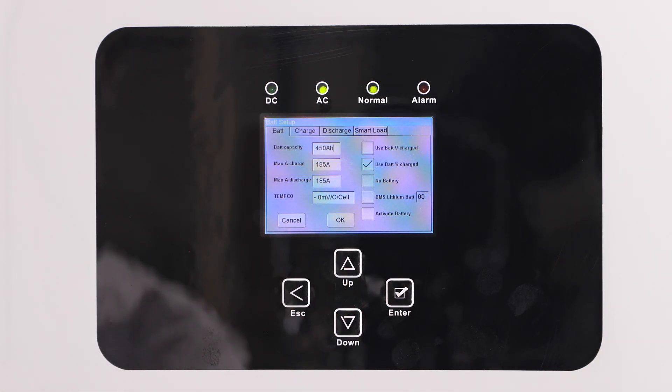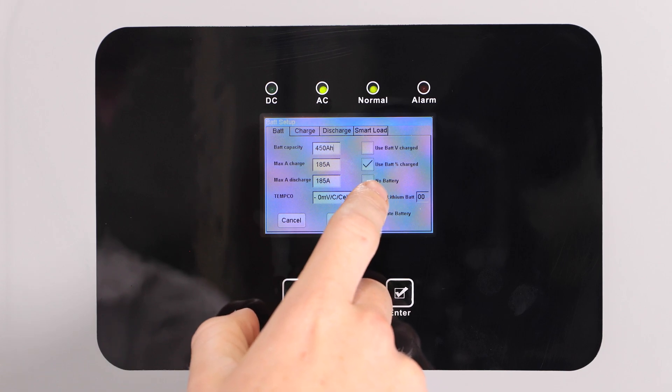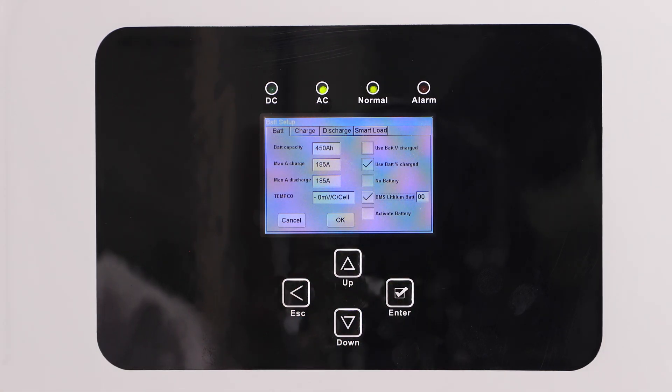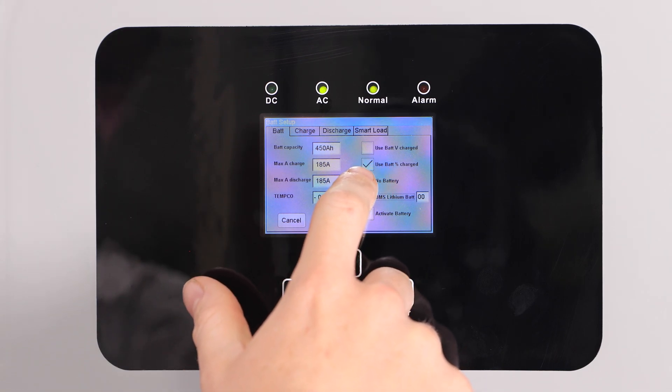On the battery tab, check the BMS lithium battery box and set the address to 00. Once you've done this, the settings on the left side of the screen will auto populate.